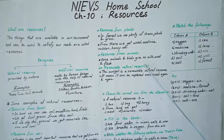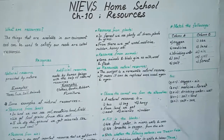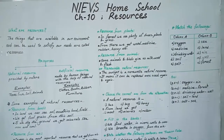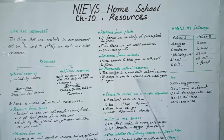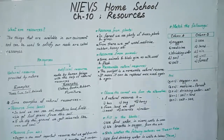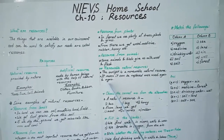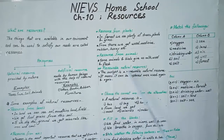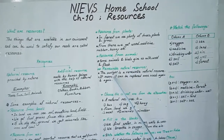Renewable natural resource. Renewable natural resource means it can be replaced once used, again and again. The example of renewable natural resource is sunlight.